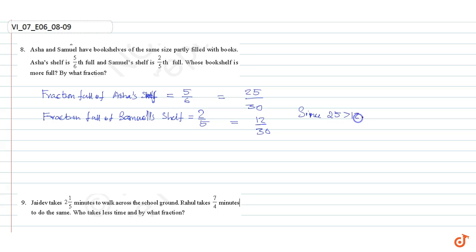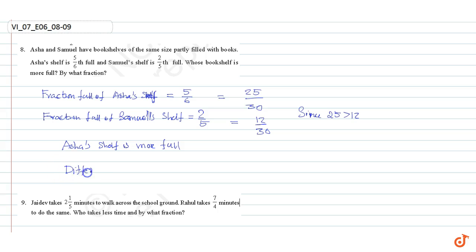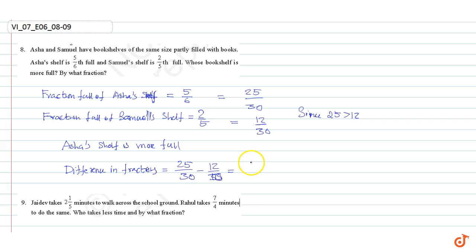Since 25 is greater than 12, Asha's shelf is more full. The difference in fractions is equal to 25 by 30 minus 12 by 30, equal to 25 minus 12 divided by 30, which gives 13 by 30.